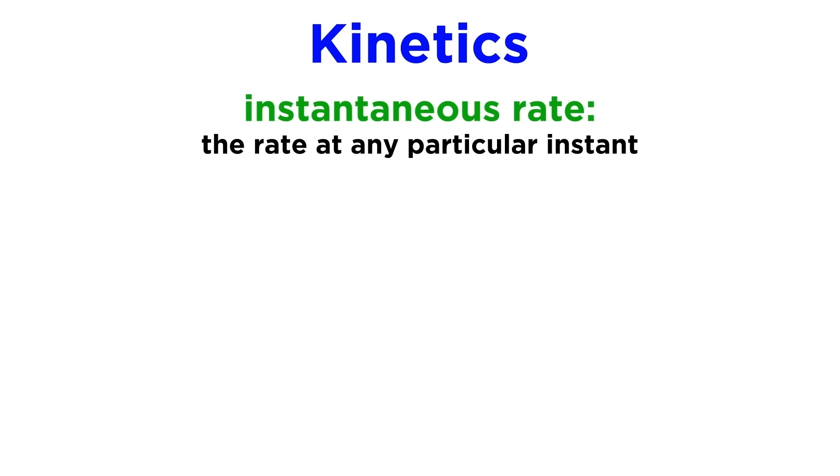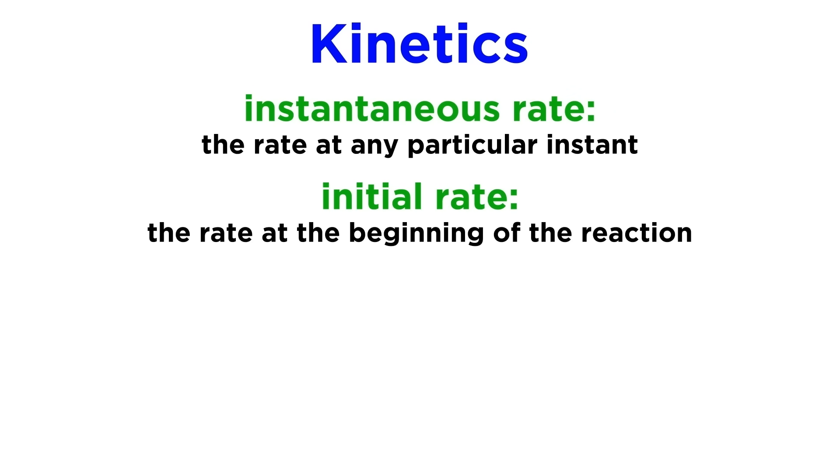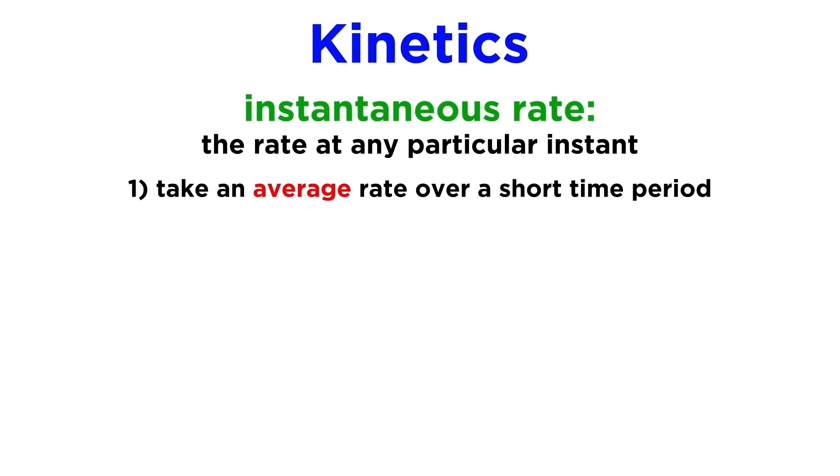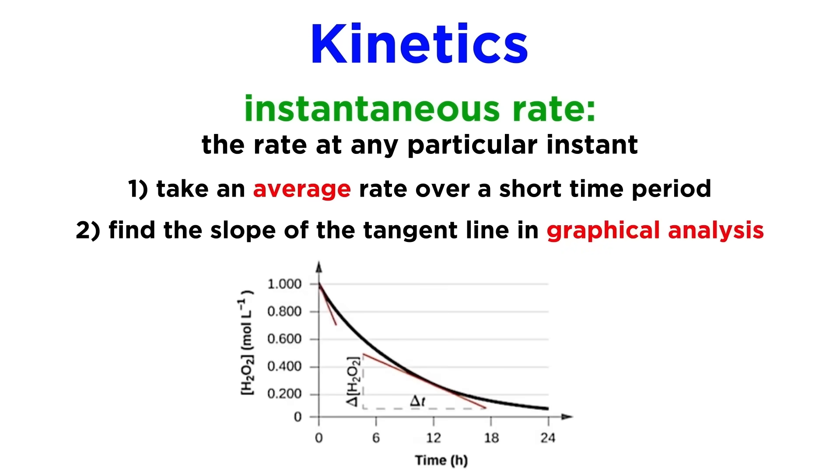The rate at any particular instant is called an instantaneous rate, and the rate at the very beginning of the reaction is called the initial rate. Instantaneous rates can be approximated by either taking an average rate over a very short time period, or by graphing rate data and examining the slope of the line that is tangent to the curve at any particular moment. The slope of that tangent line will be the instantaneous rate at that moment.